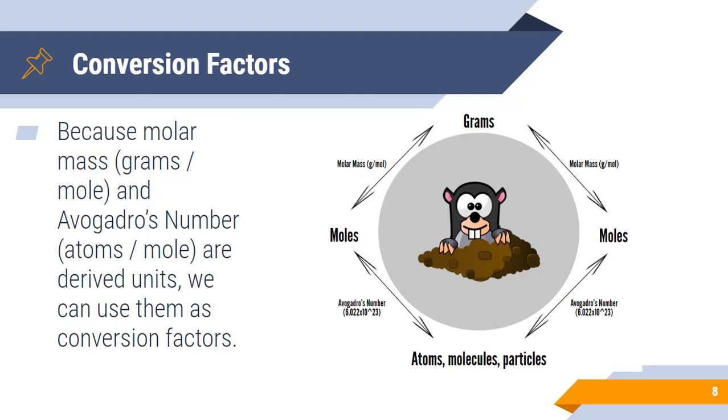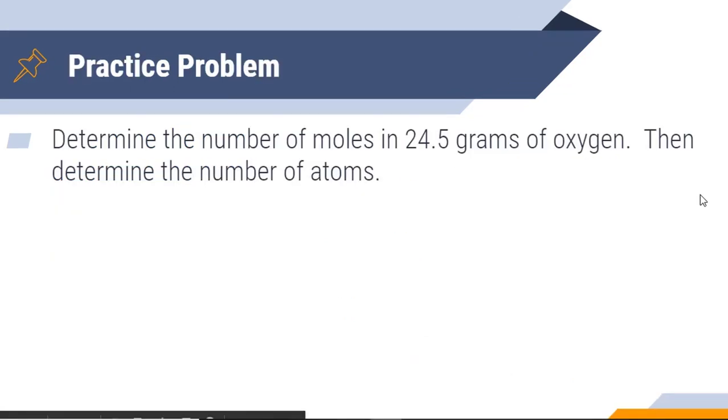Let's do a practice problem. Determine the number of moles in 24.5 grams of oxygen, then determine the number of atoms. Well, this is a pretty straightforward problem as well. We're given 24.5 grams of oxygen, and the question is asking for moles. Well, is there a direct conversion between grams and moles? Then the answer is yes. We look at our mole wheel. We're going to use our molar mass. So let's start off with what we know. This is a dimensional analysis problem. We're going to start off with what we know. This is a dimensional analysis problem.